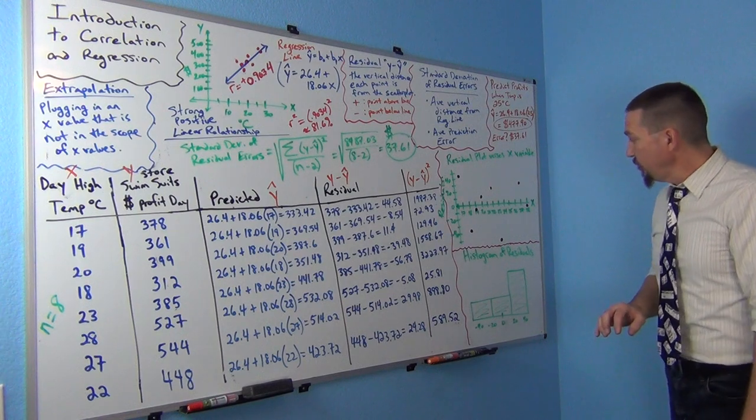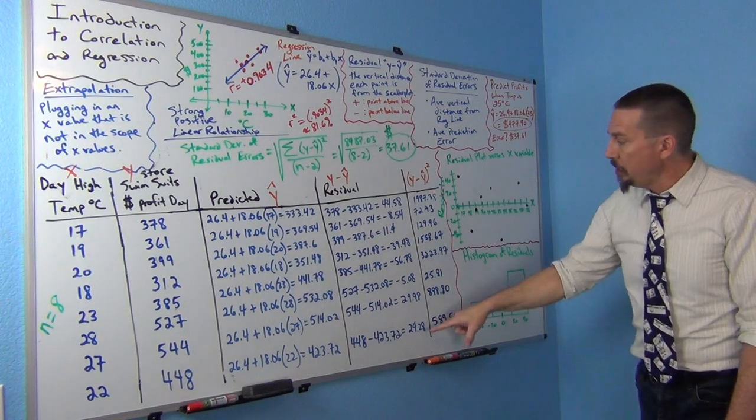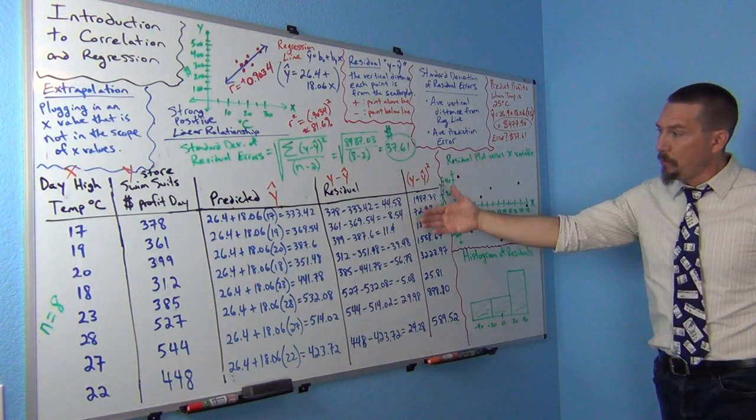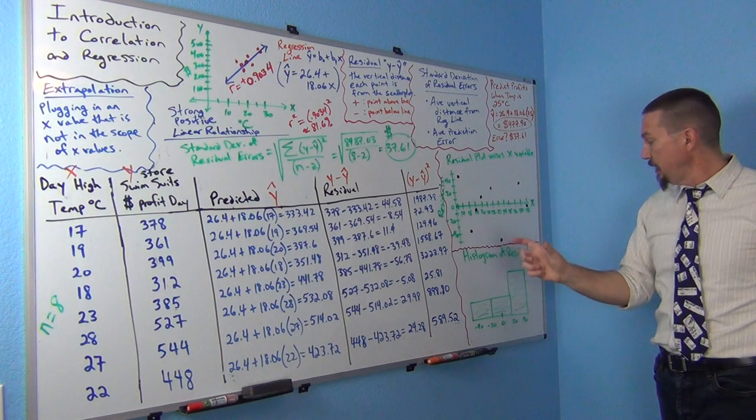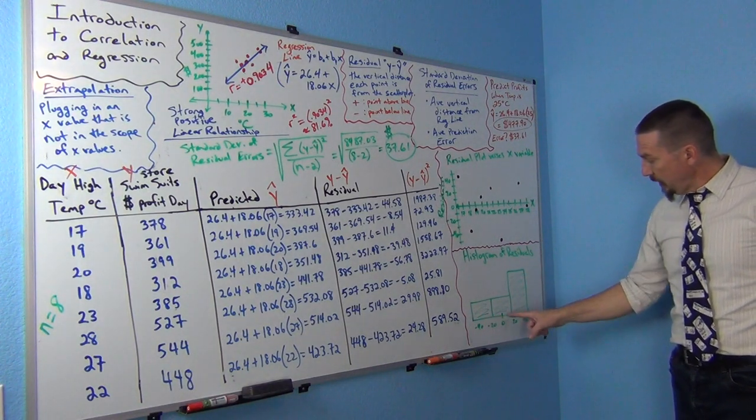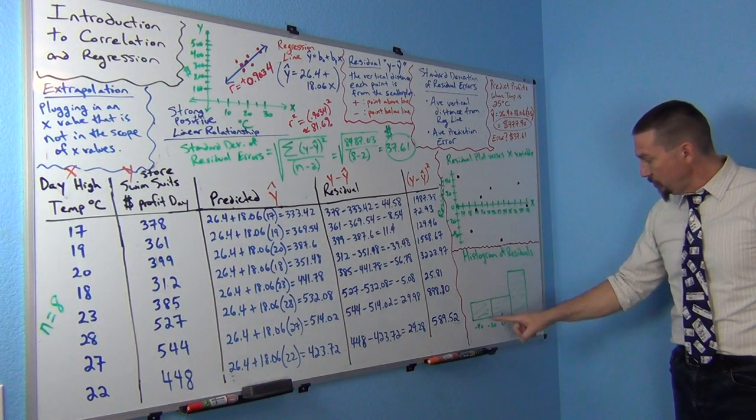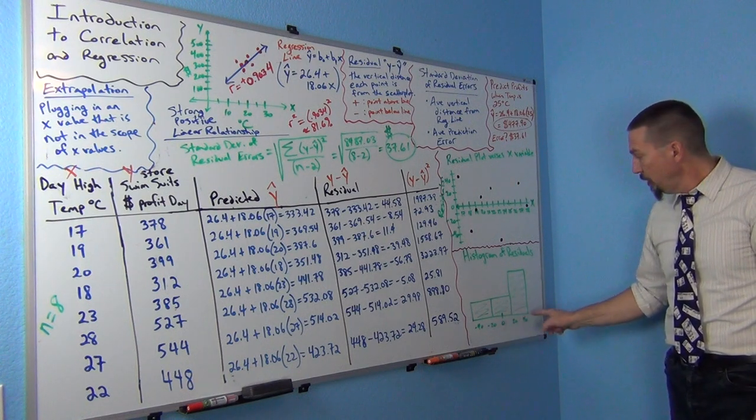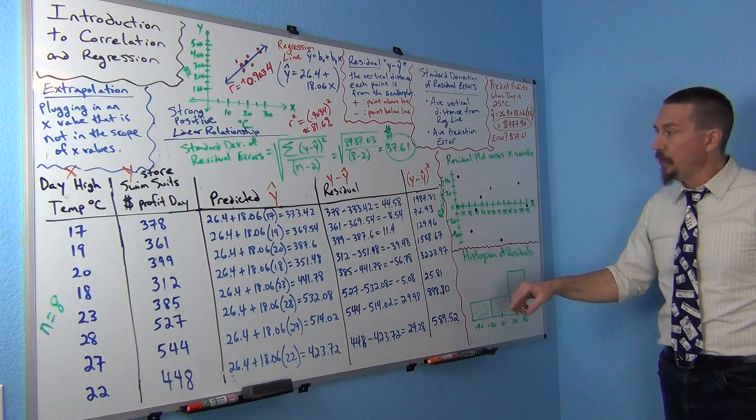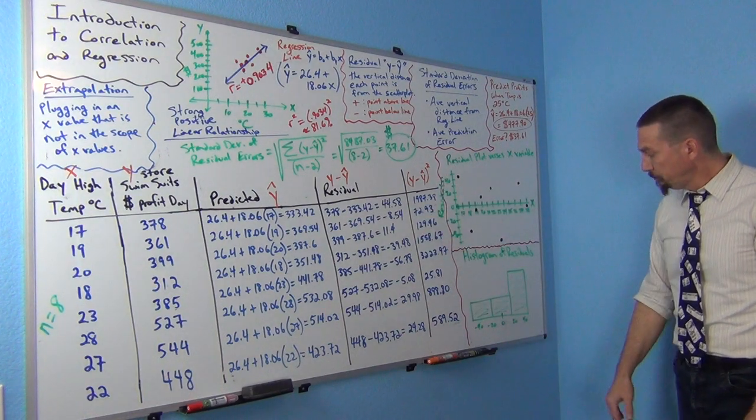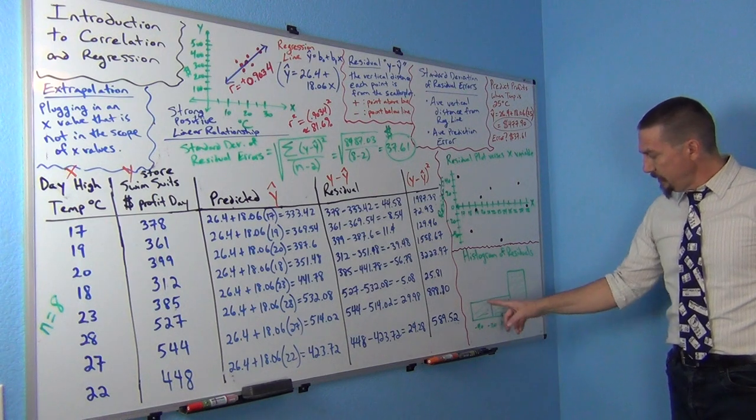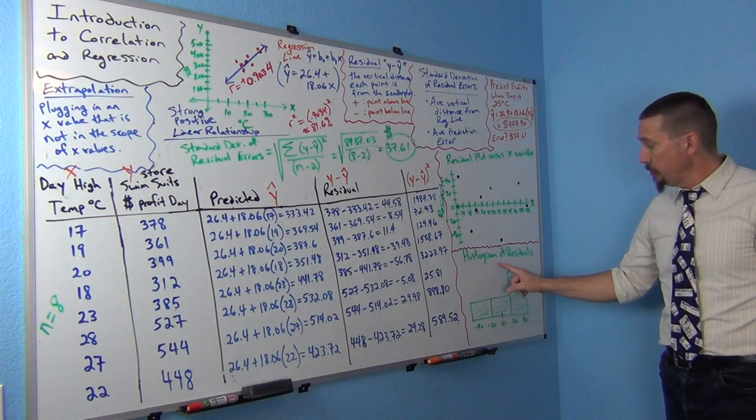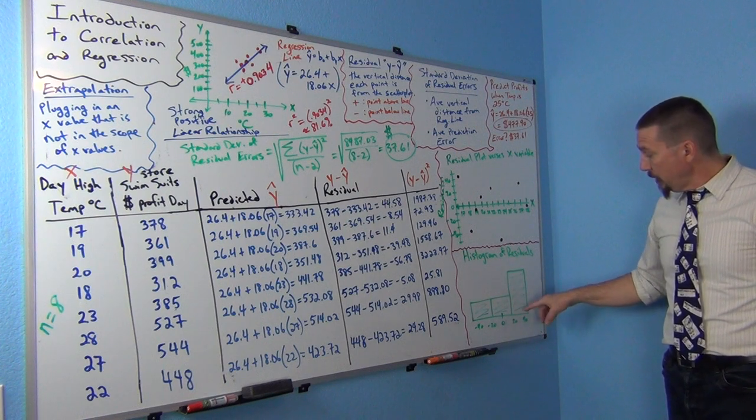Another graph you'll see occasionally is they'll make a histogram of these residuals. So they'll actually make a histogram counting how many numbers were in each section. So you'll kind of see again with the residual, histogram of the residuals, you'll see these negative, positive numbers and you'll see zero. So this is a histogram of these residuals right here. So you can kind of see what it looks like. One of the two things we like to look at with this histogram of the residuals.